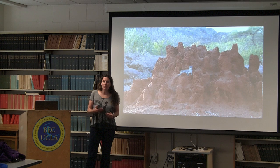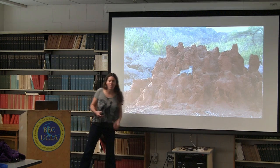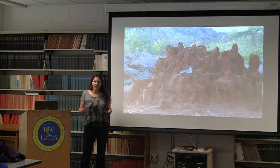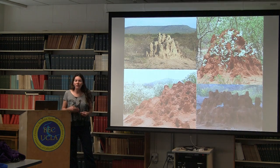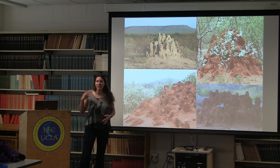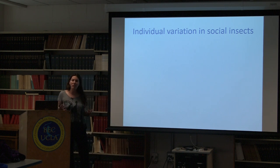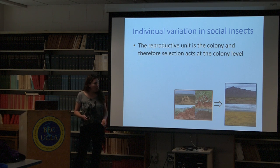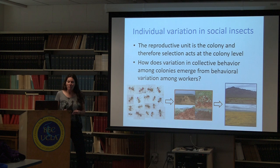The nice thing about social insects is that there is more than one level of individuality. In social insects, selection acts at the level of the colony. We can look at different colonies and see variation among them and how they survive in different environments. The main question I'm interested in is how individual variation at the colony level emerges from variation at the worker level.